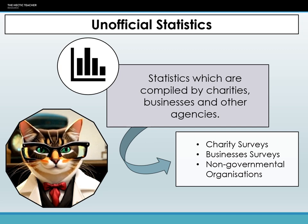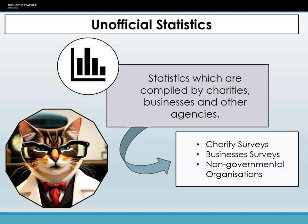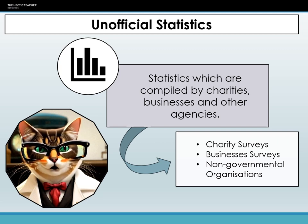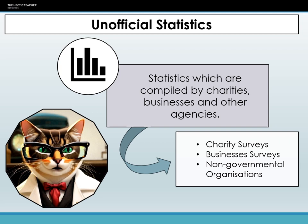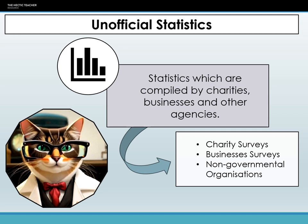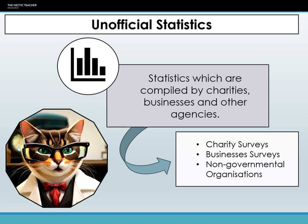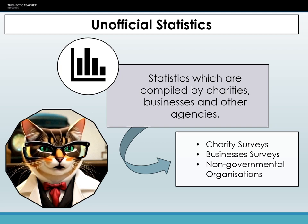Furthermore, since unofficial data collection is not bogged down by bureaucratic red tape, the findings can be more current. This immediacy can be especially important in rapidly evolving situations, such as tracking sentiments during a social movement or understanding immediate public reactions to a new policy. Moreover, the less rigid structures can also allow for innovation in data collection methods, incorporating, for example, digital tools or social media analytics.